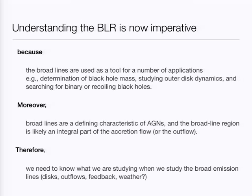Moreover, the broad lines are a defining characteristic of AGN, and we really would like to know what we are studying when we're looking at them. Are we studying the accretion flow? Are we studying an outflow? Studying the outflow is worthwhile because it's a source of feedback that is invoked often in scenarios for galaxy evolution. Or, are we just studying the weather? I will proceed by giving you one example of how we use the broad emission lines as a tool, and through that, motivate further the need to understand the structure of the broad line region.